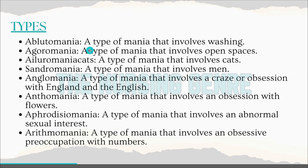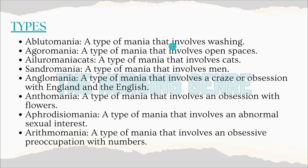Next, alibitomania — a type of mania that involves washing. Next, agaromania — a type of mania that involves open spaces. Next, eliromania — a type of mania that involves cats.